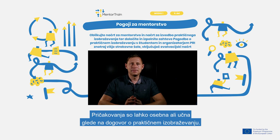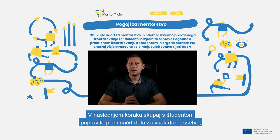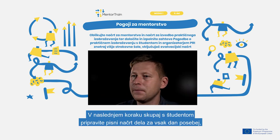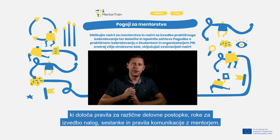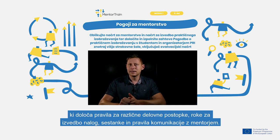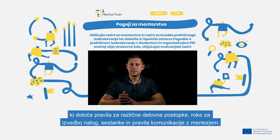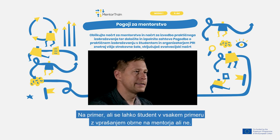Expectations can be personal and academic according to the training agreement. The next step is to write down together with the apprentice a work plan on a daily basis, with rules for different work procedures, deadlines for tasks, meetings, and communication rules with the mentor — for example, whether the apprentice can come to the mentor at any time and ask or not.